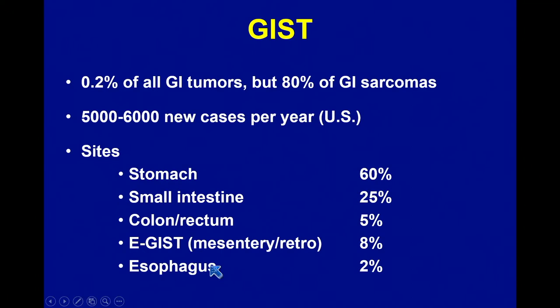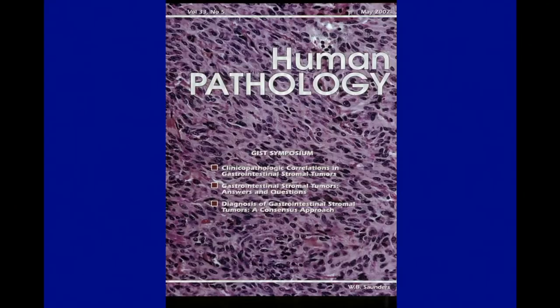The most common location by a long shot is the stomach, followed by the small bowel. Colon and rectum we see on occasion, particularly in the anorectal area. Sometimes you actually have GI stromal tumors not attached to the GI tract — like in the omentum or the retroperitoneum. Those are called eGISTs, or extra-gastrointestinal stromal tumors, and the rules for those are not entirely clear. The esophagus is a really rare location for a GI stromal tumor.